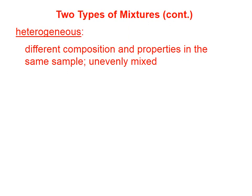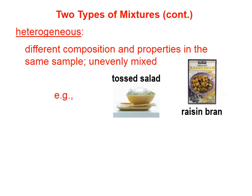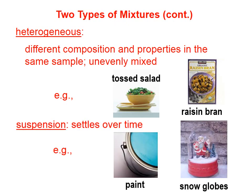The other type of mixture is a heterogeneous mixture. Heterogeneous mixtures have different composition and properties within the same sample — they're unevenly mixed. If you can look at a mixture and identify any part that looks different from another part, that's a heterogeneous mixture. A tossed salad is definitely heterogeneous — not every forkful is the same. Raisin Bran is another example. One specific type of heterogeneous mixture is a suspension, which will settle over time. Paint is a suspension — you need to shake or stir it before applying it.